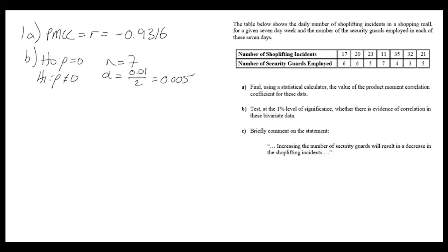So 0.01 divided by two gives us 0.005 as our level of significance for looking up the critical value. Looking at the tables and cross-referencing seven with 0.005, the critical value is 0.8745.